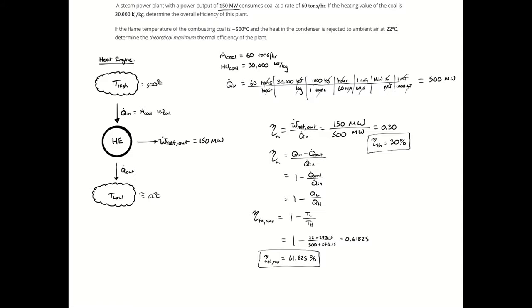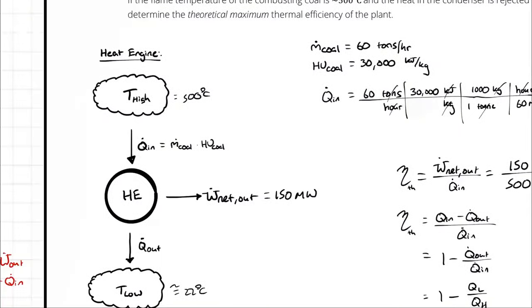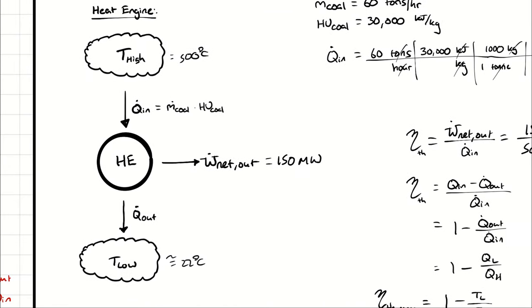By the way, while we're here, knowing that the rate of heat transfer in is 500 megawatts, and the rate of net power output is 150 megawatts, how much heat is rejected? If you said 350, you're right. We are bringing in 500 megawatts of heat. We are rejecting 150 of that as net power output, which means that the remaining 350 must leave as heat transfer output.